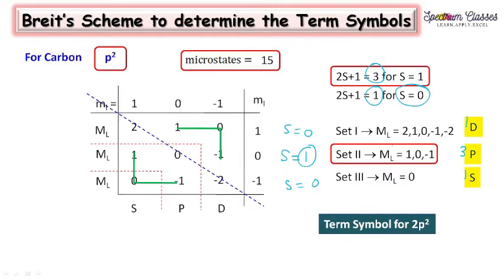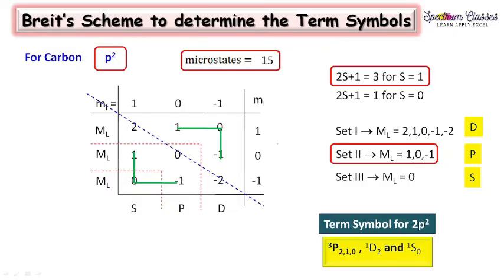To summarize the method: in step 1, write ML values for one electron on the horizontal and ML values for the second electron in the vertical column; draw the grid and define the sets; cut down the diagonal elements; identify the remaining elements; and find which set matches the three values to assign the maximum multiplicity of 3. All other sets receive the lesser multiplicity.